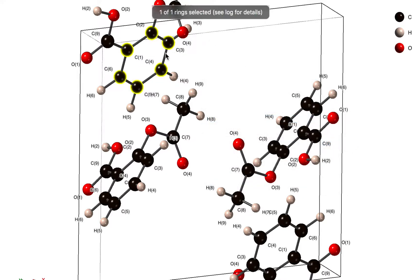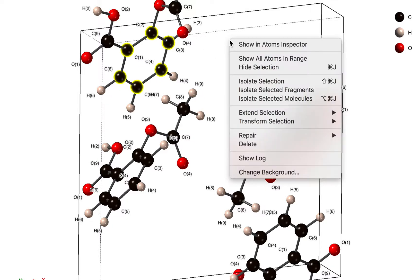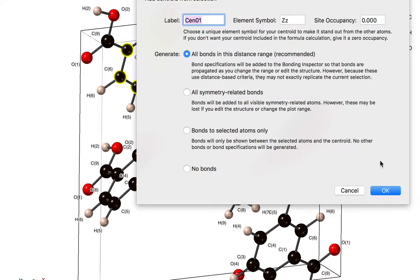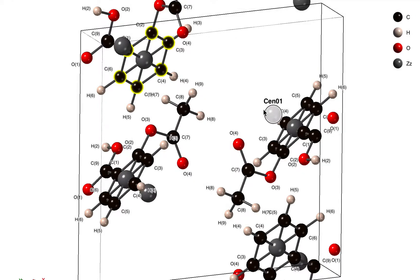Now I want to put a dummy atom right in the center of this ring, and I can do that by using the transform selection add centroid atom command. Now that prompts me for various parameters. Let's just use the default parameters for the moment.